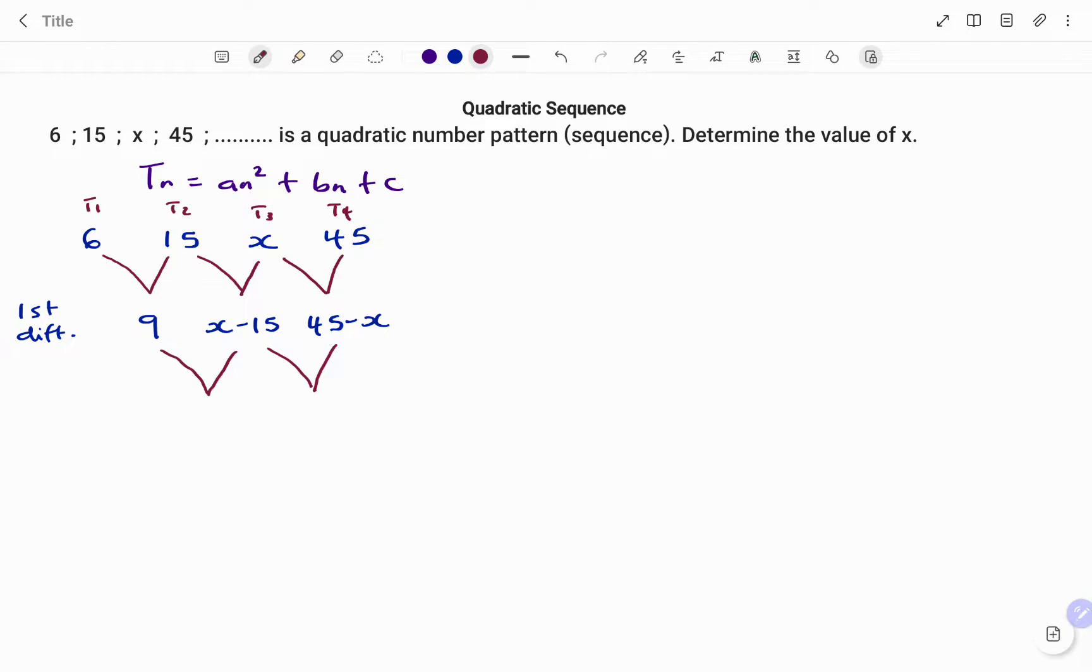The second step is to find the second difference, which is constant. Remember, to find the difference is always the term in front minus the term behind. So in this case, the term in front is x minus 15, minus the term behind, that's 9. And we also have the term in front, 45 minus x, minus the term behind, x minus 15.